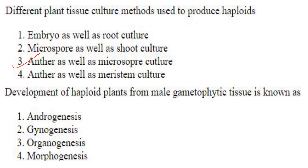Development of haploid plants from male gametophytic tissue is known as androgenesis. Answer is option 1. Gynogenesis is formation of embryos from unfertilized egg cells — it can be used for haploid production, but not from male gametophytic tissue. Here the question is specifically for male gametophytic tissue, so it is androgenesis. Organogenesis is formation of organs from undifferentiated cells, and morphogenesis is the development of the whole plant.